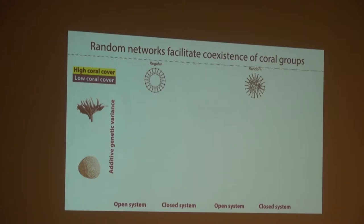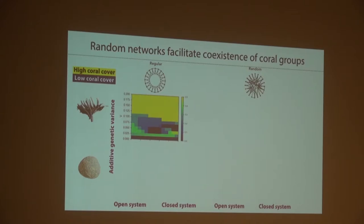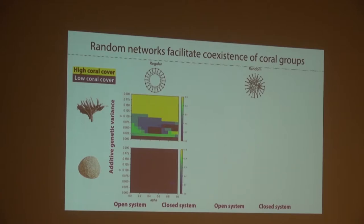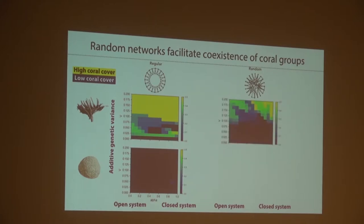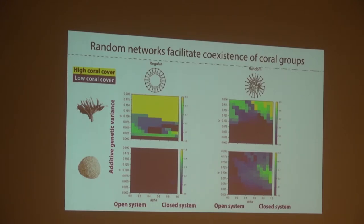Now looking at each coral group separately — colors go yellow for very high and dark purple for very low — for the regular network, coral species two is essentially dead in these simulations. In the random network there's much more coexistence: species one tends to do well in random networks when there's relatively higher genetic variance, whereas coral two does well under other conditions.